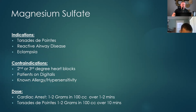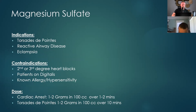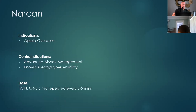Mag sulfate: for torsades de pointes, reactive airway disease like asthma, and eclampsia — you're not going to see most of these pre-hospital. Contraindications again: second and third degree AV blocks.